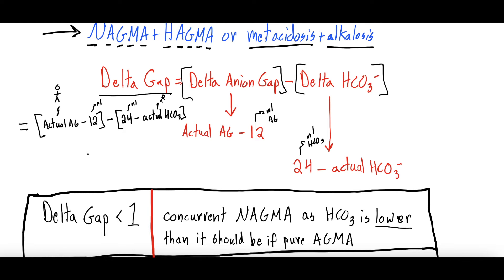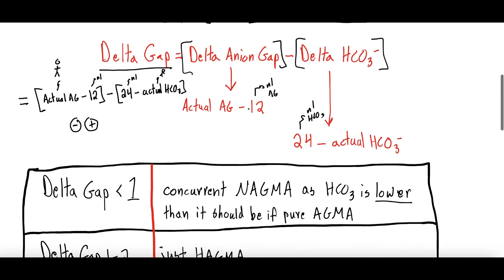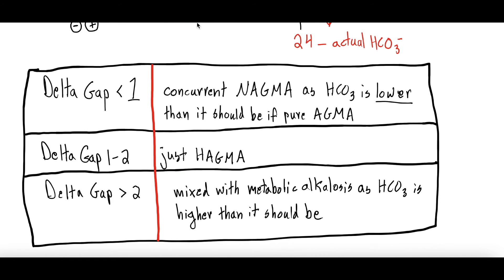That equation gives you a number — sometimes negative, sometimes positive. To recap: delta gap = (patient's anion gap − 12) − (24 − patient's bicarbonate). The normal anion gap is 12, the normal bicarbonate is 24. The patient values come from their basic metabolic panel, and interpreting the resulting number tells you whether there is a combined disorder.